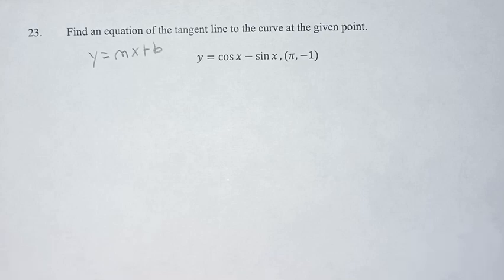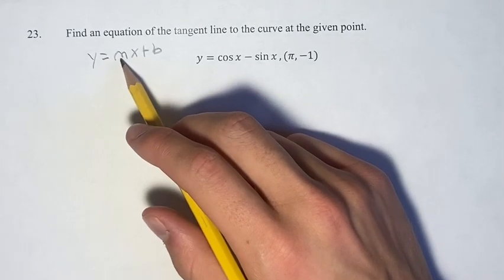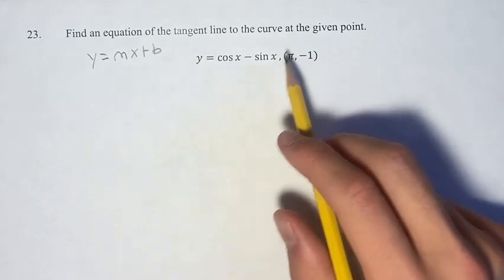So the first thing we're going to do is find the slope. The slope of the tangent line is the value of the derivative at that point.